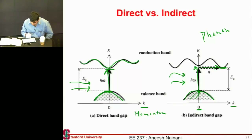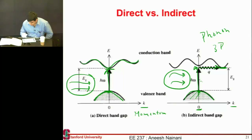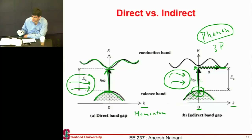So absorption in a direct band gap material is a two-particle process involving the photon and the electron, while in an indirect band gap material it is a three-particle process involving the photon, the electron, and the phonon. That's why the rate of generation is much lower for an indirect band gap material, and that's why you see much higher absorption lengths for indirect band gap materials.